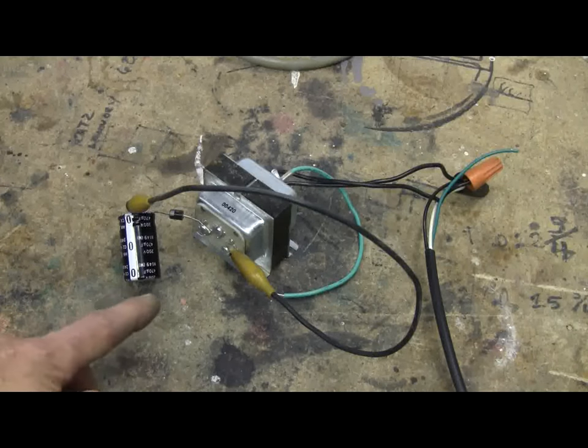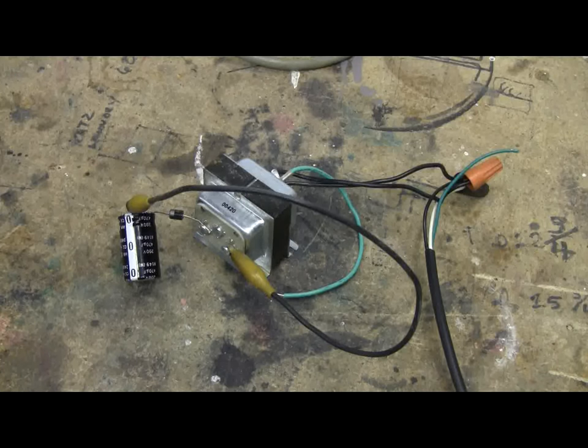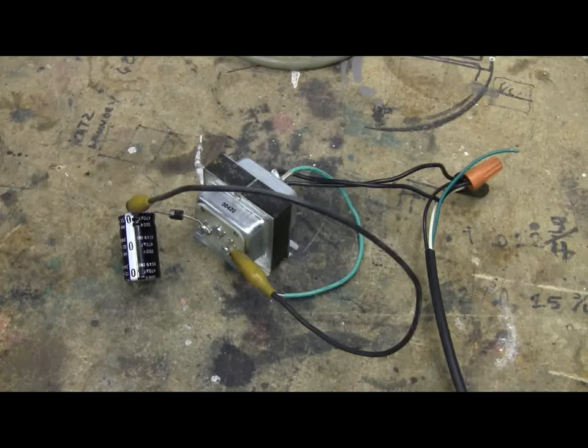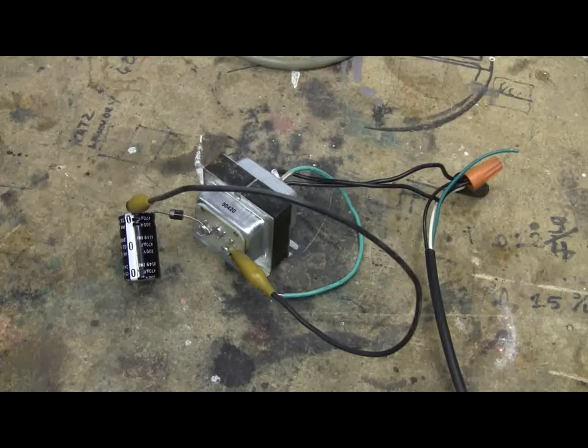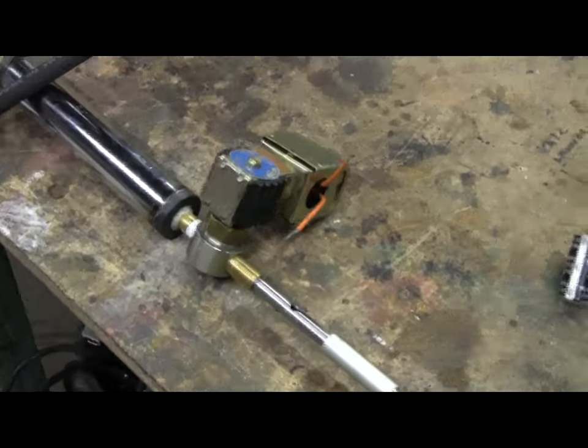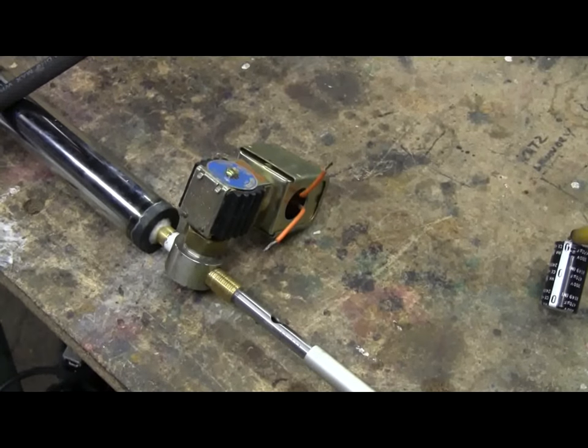So basically this can give me 24 volts AC or it can give me DC voltage rectified by the diode and filtered by the capacitor. This is going to be the power supply for the test cannon over here with its 24 volt AC rated solenoid valve.